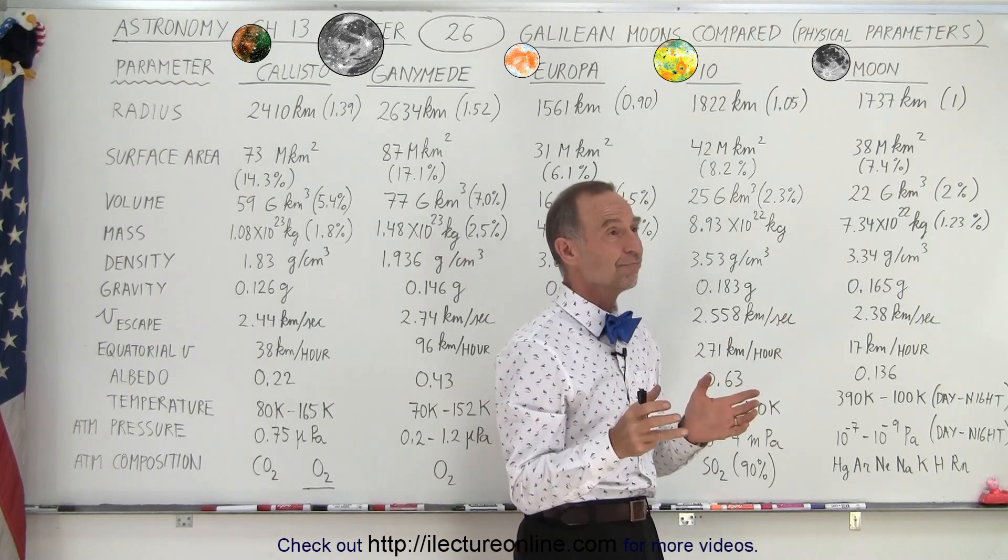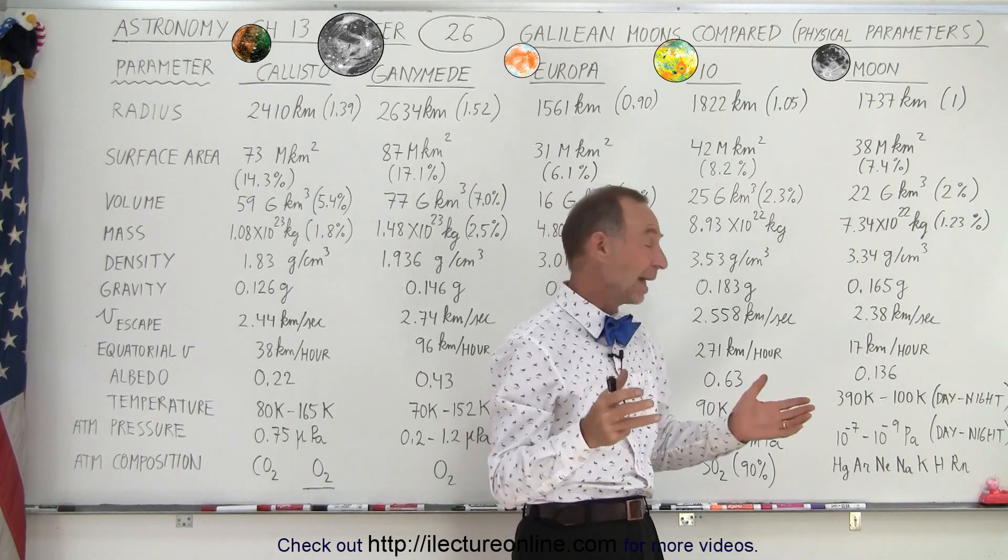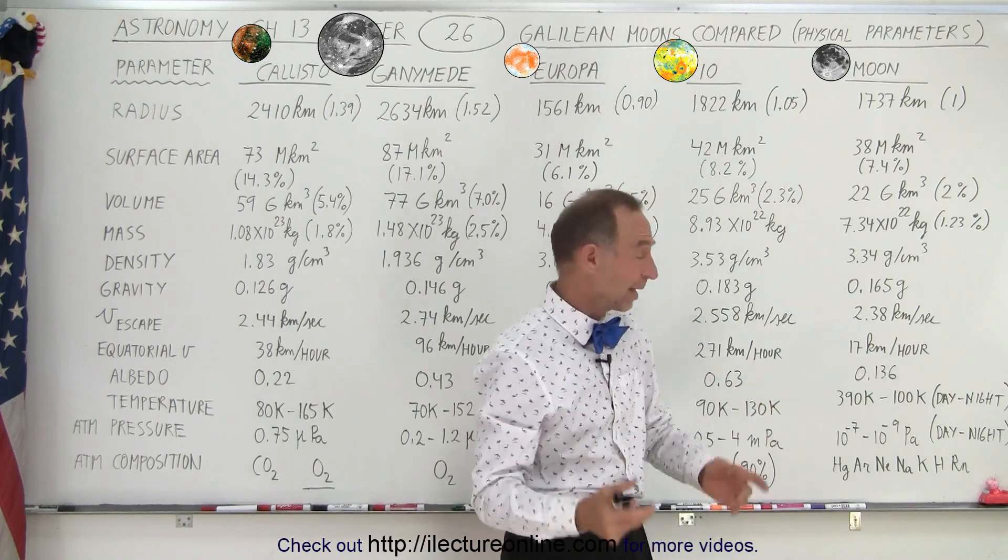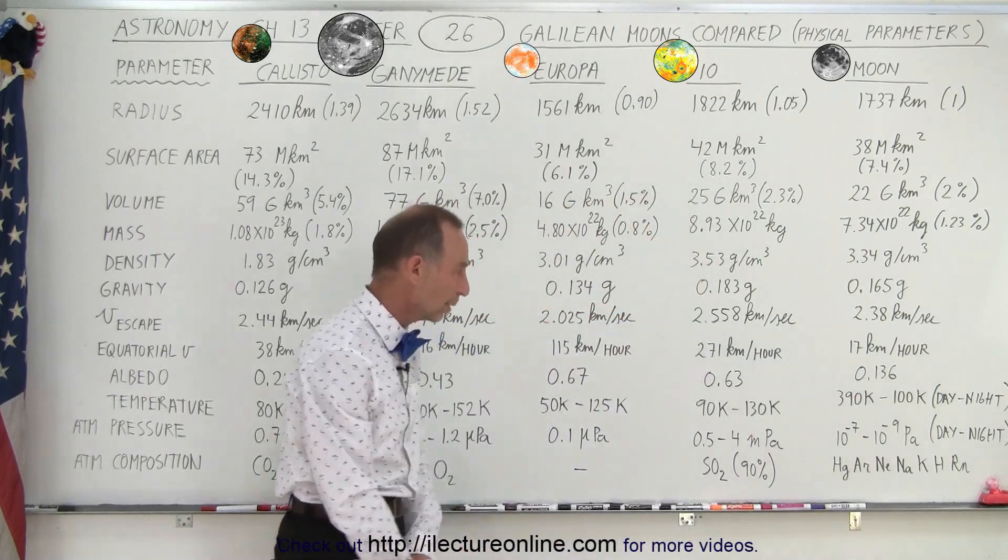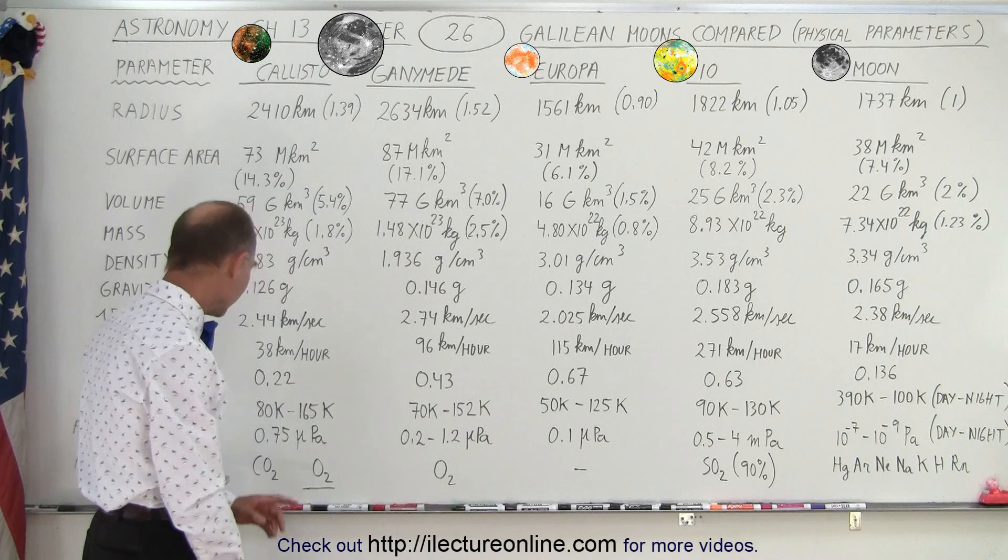That's right. Daytime temperature on the moon. The daytime lasts about two weeks, and the nighttime lasts about two weeks. So after two weeks of cooling down, the temperatures get to be quite low on the moon.